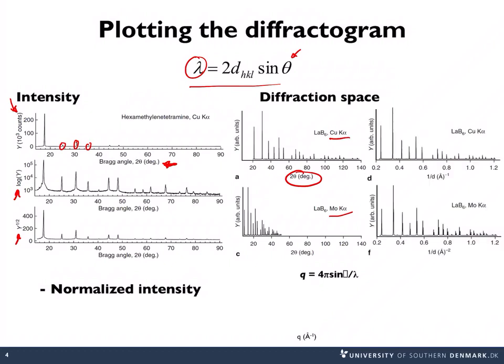Instead, we can plot as 1 over D, which means that these two data sets, where we have the copper k-alpha and the molybdenum k-alpha, the position of the peaks in these patterns would be the same.